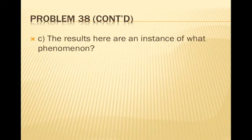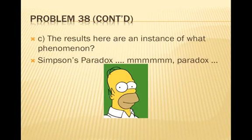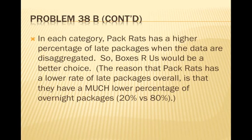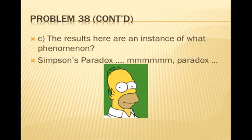This is called Simpson's Paradox: when there appears to be a relationship in one direction — here, Pack Rats appearing better than Boxes R Us overall — but when you break the data down by an important variable, the direction reverses. So Boxes R Us is actually the better choice. It's just that in the trial period, the cards were stacked against them because they had so many overnight packages, which are harder to deliver on time. This is Simpson's Paradox. Be ready to practice some problems in class next time.